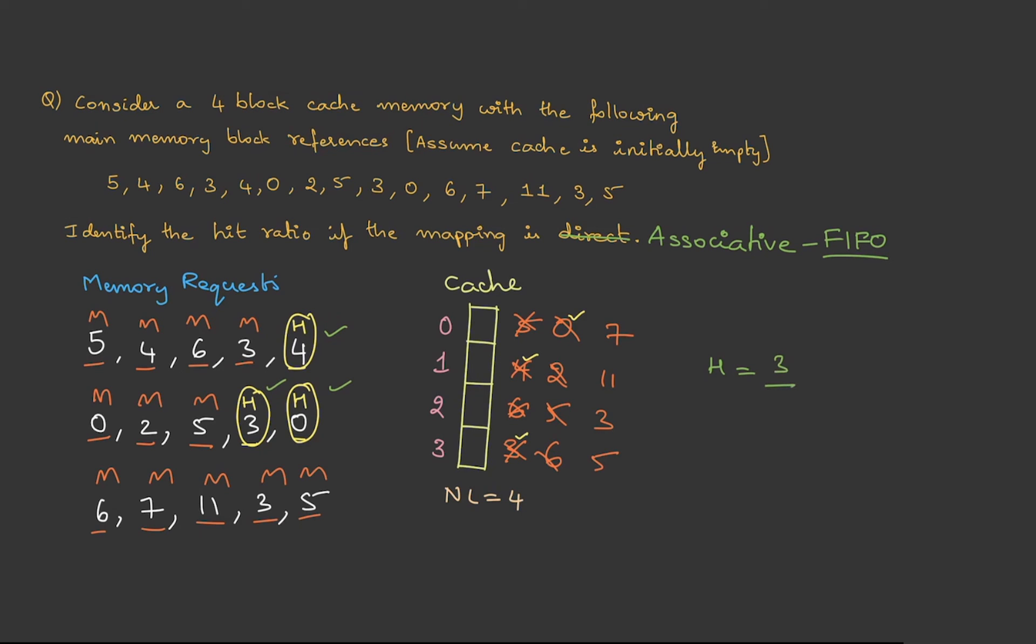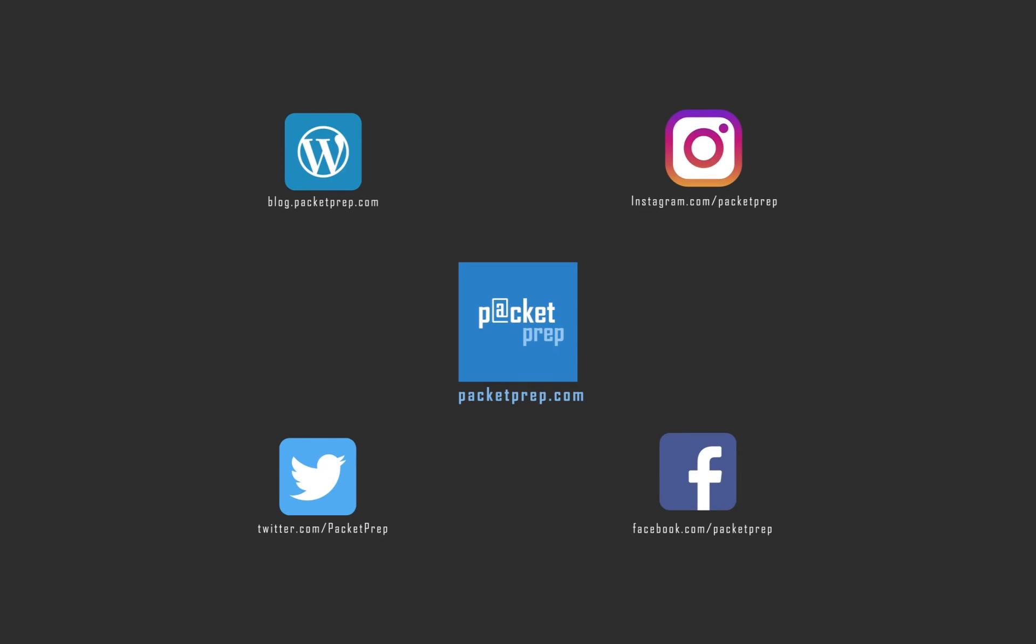Now, to calculate hit ratio. Hit ratio is number of hits divided by attempts. Here we have 1, 2, 3 hits upon 15 attempts. Therefore, hit ratio is 1 by 5. I hope you are able to understand how we are doing this.